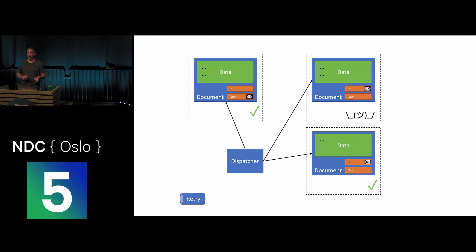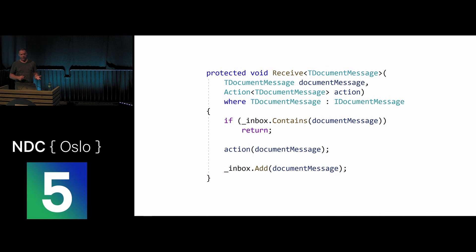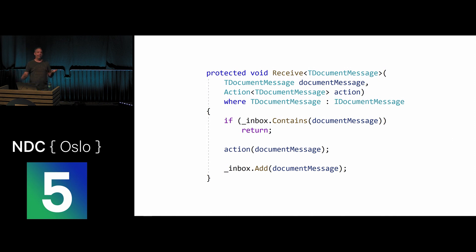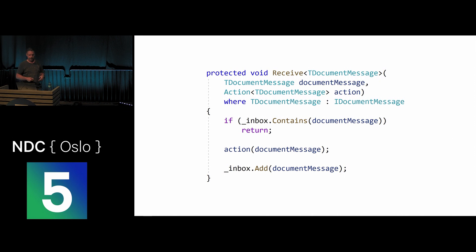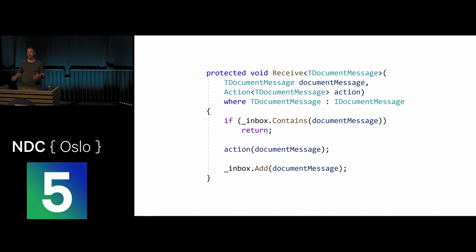The receive method inside a document handler checks whether the message already exists in the inbox. If so, it simply returns — nothing to do. If not, it performs the business logic and adds the message to the inbox as its final step, so if called a second time it exits immediately. This provides built-in idempotency: the handler can execute multiple times, but the operation only processes once — giving us at-least-once delivery with exactly-once processing.